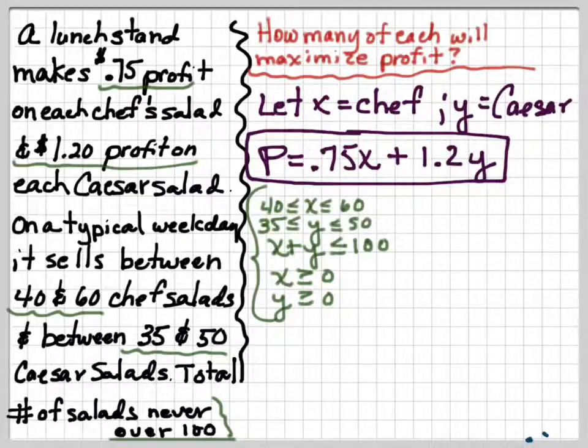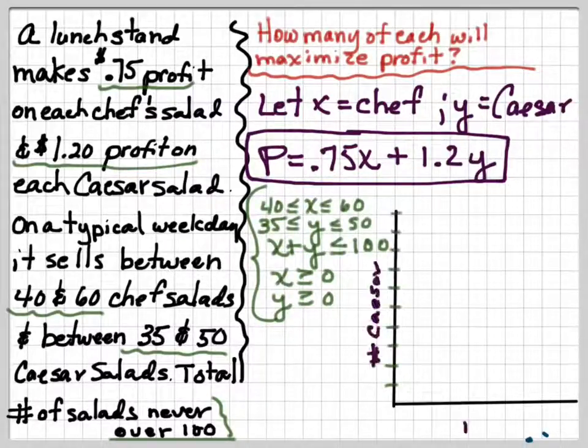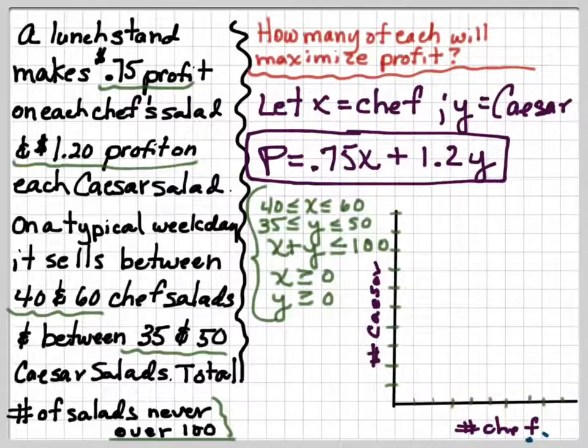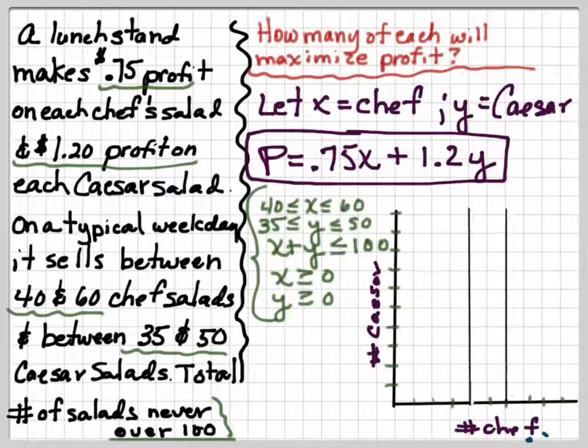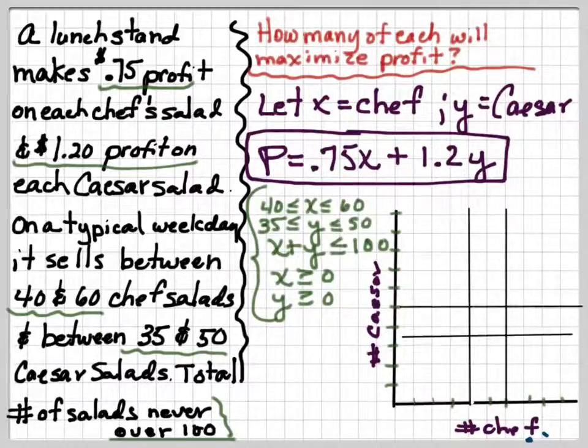Now what we're going to do is graph these. And I'm going to put on the x-axis the number of chef's salads because that's my x, and on the y-axis the number of Caesar salads because that's my y. And I'm going to go ahead and graph these. Well, x lies between 40 and 60. That means it's going to be in between those two vertical lines. And y is going to be between 35 and 50. So it's going to be between those two vertical lines. So that means my area that I'm looking for is right there. It's going to be constrained to that.